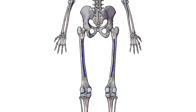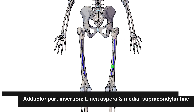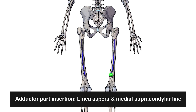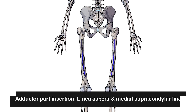Swapping back to a posterior view again, we can see the insertion of the adductor portion of the adductor magnus, and that's on the femur — specifically on the linea aspera, which comes down here and then splits off onto the medial supracondylar line. We'll swap over to a different view so we can inspect that in a little bit more detail.